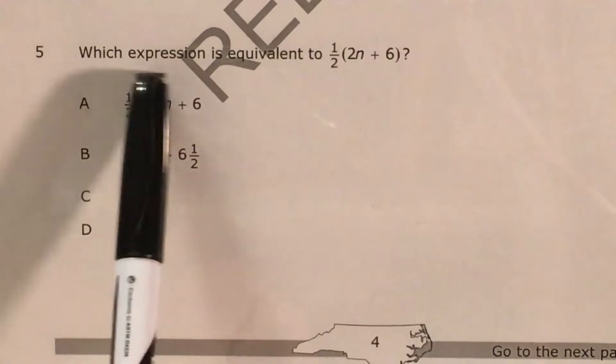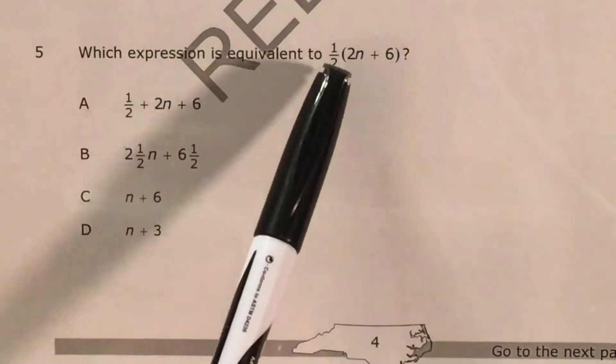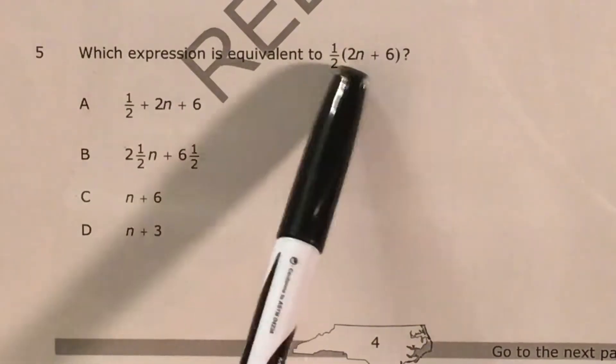We can see that we're only being asked to find which expressions, any of our answer choices, is equivalent. So it says the same thing, just with different numbers, to 1 half times 2n plus 6.